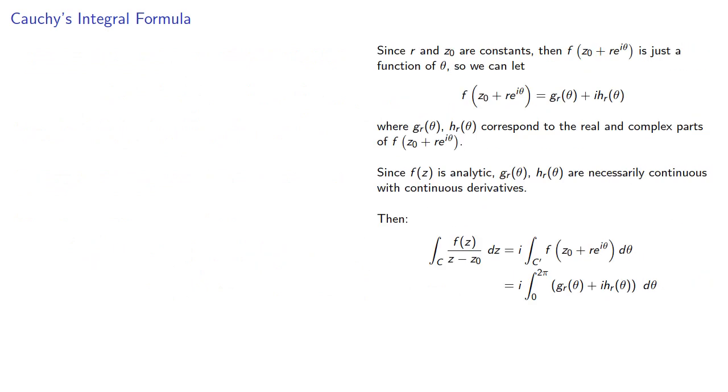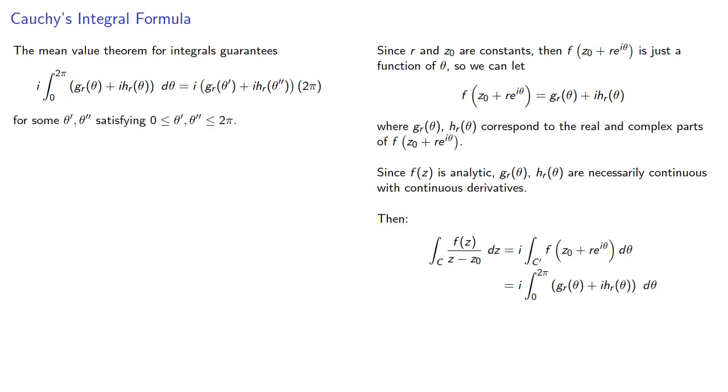Now since we have a real integral and the integrand is continuous, the mean value theorem for integrals guarantees that we can evaluate this integral by evaluating our function at some point in the interval. So our original integral is this integral, which we can evaluate as a single complex number.